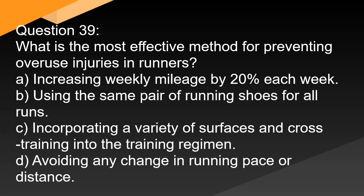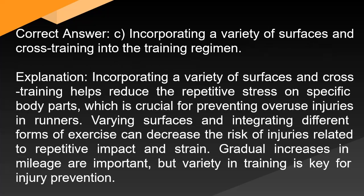Question 39: What is the most effective method for preventing overuse injuries in runners? A. Increasing weekly mileage by 20% each week. B. Using the same pair of running shoes for all runs. C. Incorporating a variety of surfaces and cross-training into the training regimen. D. Avoiding any change in running pace or distance. Correct answer: C. Incorporating a variety of surfaces and cross-training helps reduce the repetitive stress on specific body parts, which is crucial for preventing overuse injuries in runners. Varying surfaces and integrating different forms of exercise decrease the risk of injuries related to repetitive impact and strain. Gradual increases in mileage are important, but variety in training is key for injury prevention.